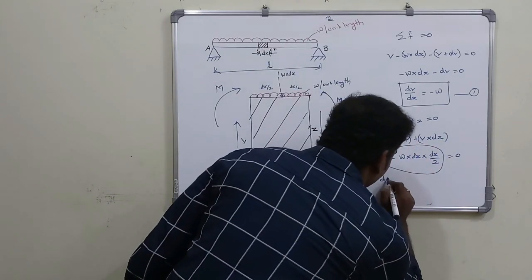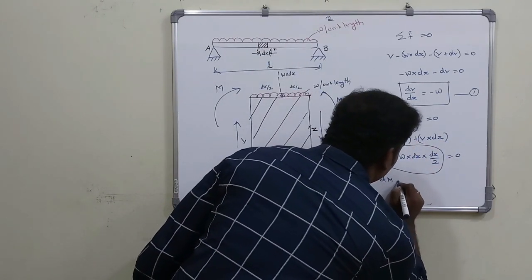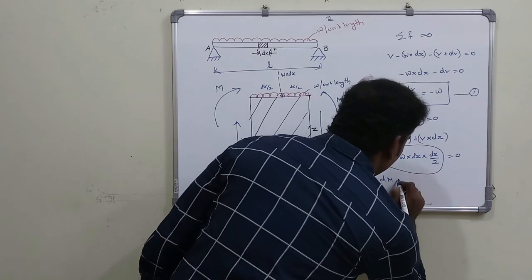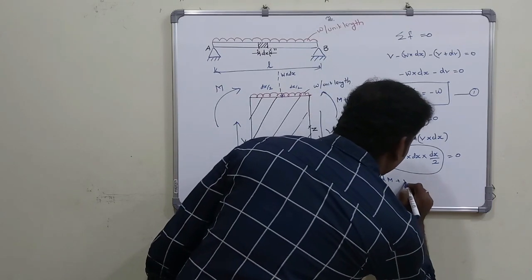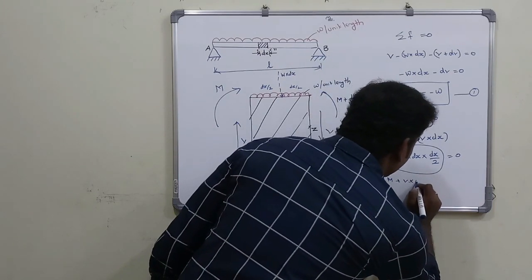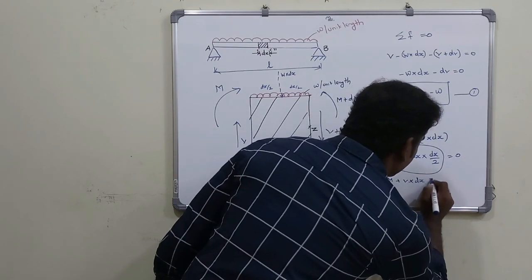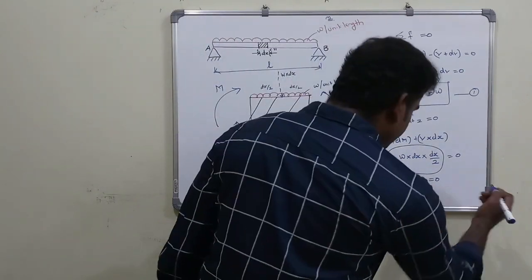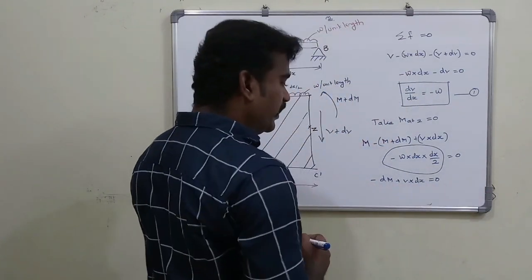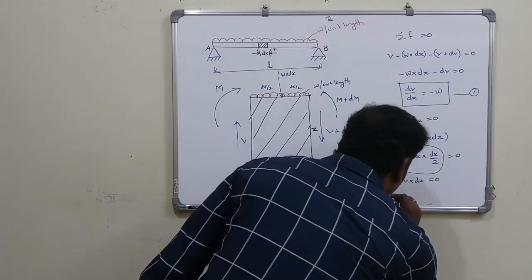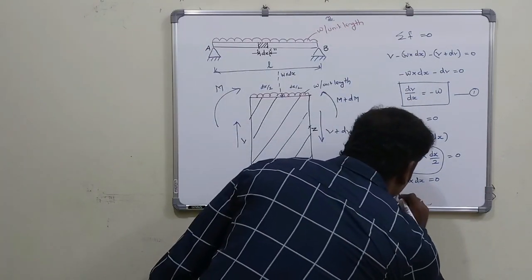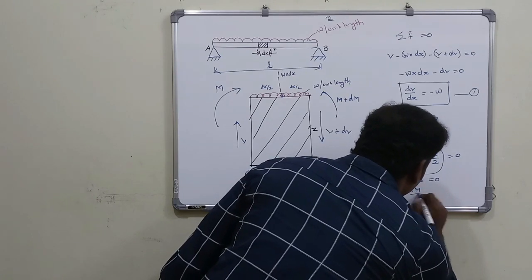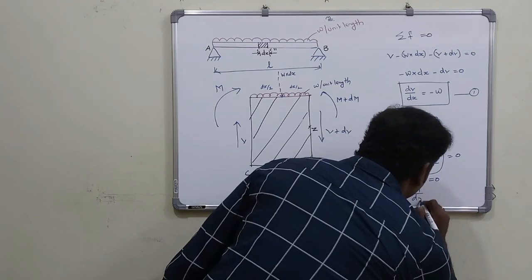The dx squared term is negligibly small — of order 10 to the power minus 6 or minus 7 — so it has no effect. Simplifying: minus dM plus V·dx equals zero, which gives V equal to dM by dx.